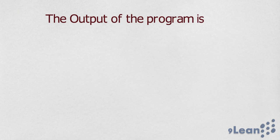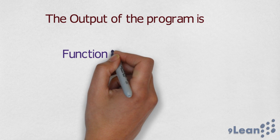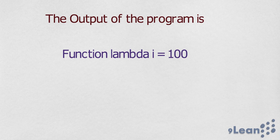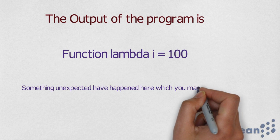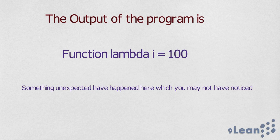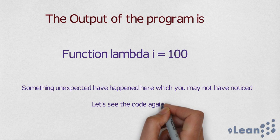The output of the program when we run it is function lambda equal to 100, which is absolutely correct. Something unexpected has happened here which you might not have noticed. So let's see the code again to notice the same.